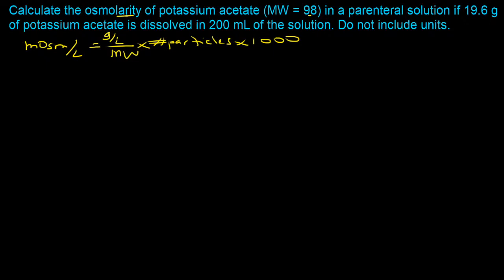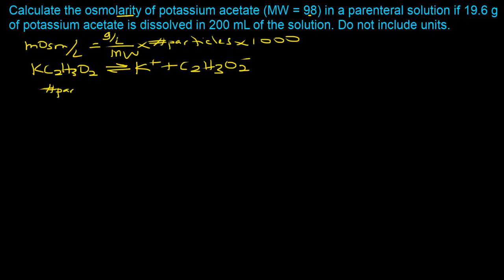The next thing we need is the number of particles. It's useful to know the molecular formula for potassium acetate: KC₂H₃O₂. In an aqueous environment, it dissociates into the potassium cation (K⁺) and the acetate anion (CH₃COO⁻). In solution you have two species — potassium and acetate — which means the number of particles is equal to 2.